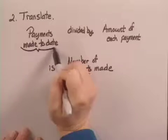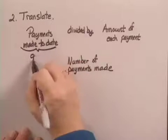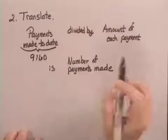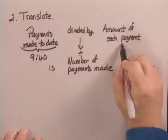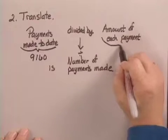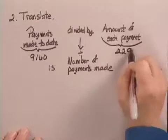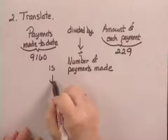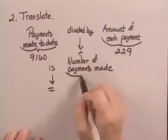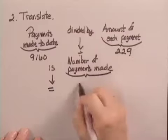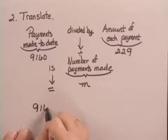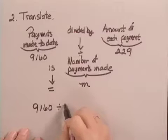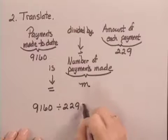So translating that, the amount of payments made to date was $9,160, divided by the amount of each payment, which was $229, equals the number of payments made, which we define to be M. So $9,160 divided by $229 equals M.